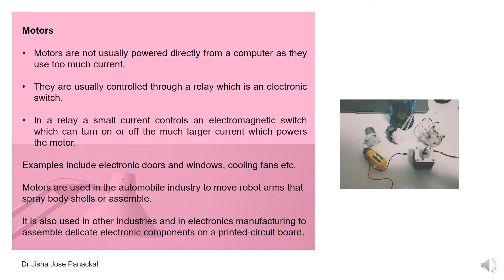Motors are also used in the automobile industry to move robot arms that spray body shells or assemble them, and in electronics manufacturing to assemble delicate electronic components on a printed circuit board. Tasks that are difficult for a human hand can be performed with the help of robot arms driven by motors.